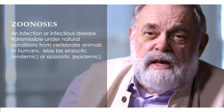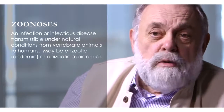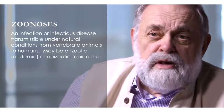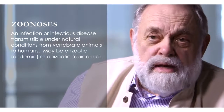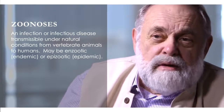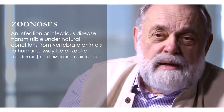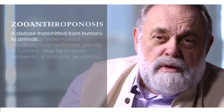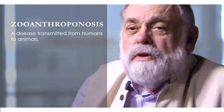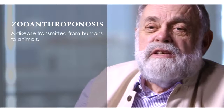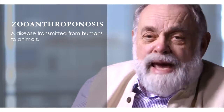In this next chapter, I want to take up the subject of zoonoses. A zoonosis is an infection or an infectious disease that is transmittable under normal and natural conditions from vertebrate animals to humans. It may be enzootic or endemic, or epizootic or epidemic. There's also another term, zooanthroponosis, which is a disease transmitted from humans to animals.